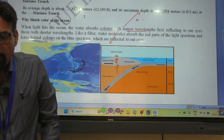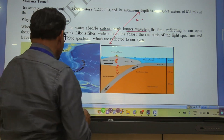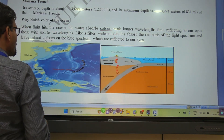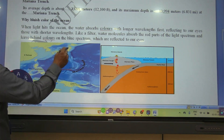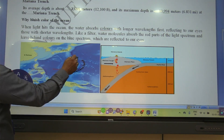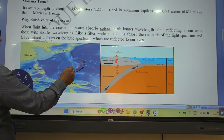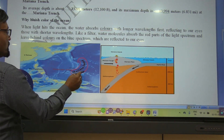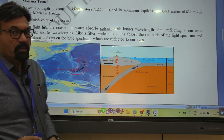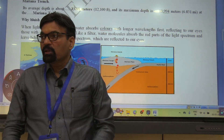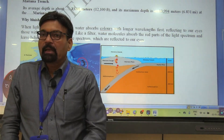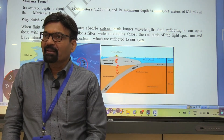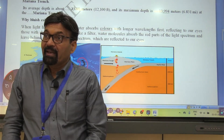Now we talk about the deepest point. The Pacific Ocean contains the deepest point on Earth — this is the Mariana Trench. The Mariana Trench is 11,000 meters, or 11 km, deep.